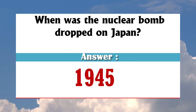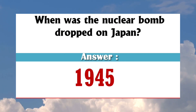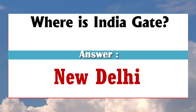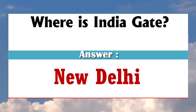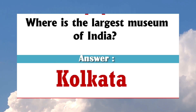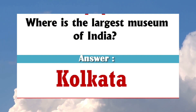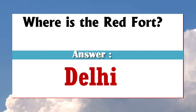When was the nuclear bomb dropped on Japan? 1945. Where is India Gate? New Delhi. Where is the largest museum of India? Kolkata. Where is the Red Fort? Delhi.